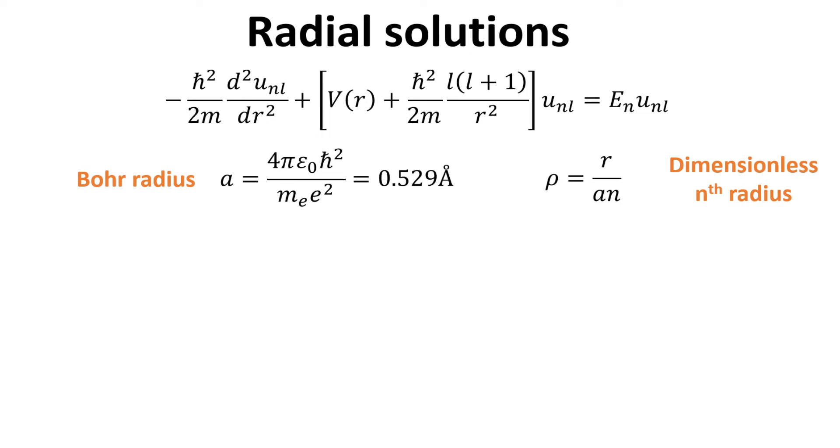We first define the Bohr radius, defined as shown in terms of universal constants. It is about half an angstrom. We also define a dimensionless radius ρ for the n energy level.